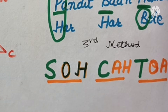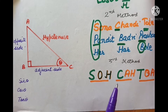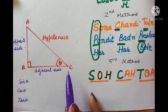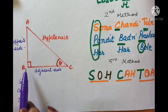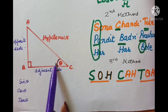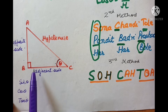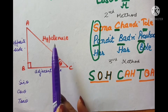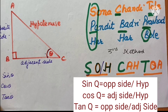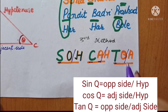The third method is 'so-ka-to-wa'. This does not use the base and perpendicular concept; rather, it uses adjacent side and opposite side. If I am using angle theta, the adjacent side is the one joining the 90-degree angle and theta, and the opposite side is clearly AB. Hypotenuse is fixed. So-ka-to-wa gives us: sin theta equals opposite side upon hypotenuse, cos theta equals adjacent side upon hypotenuse, and tangent theta equals opposite side over adjacent side.